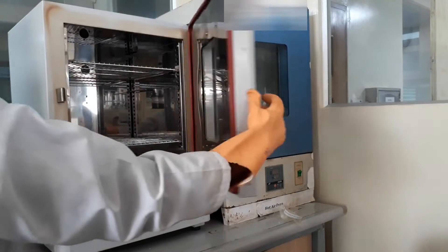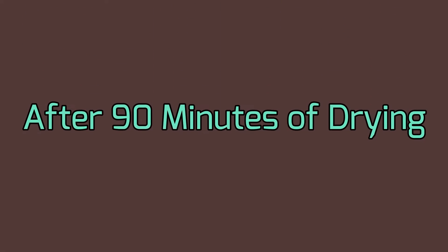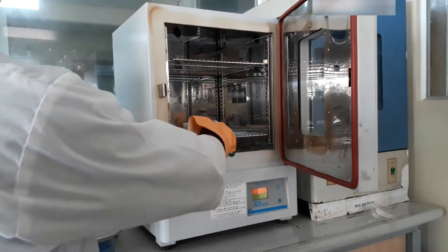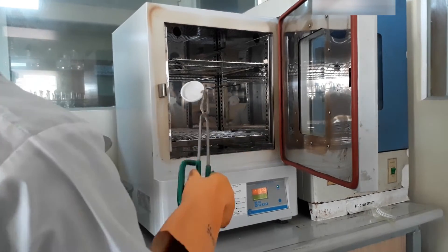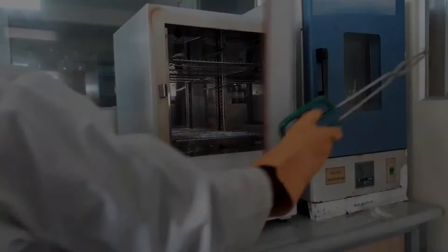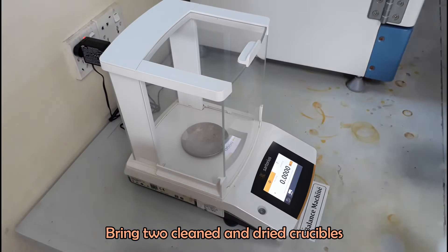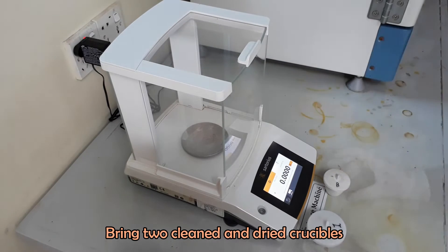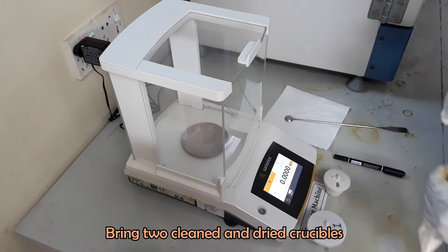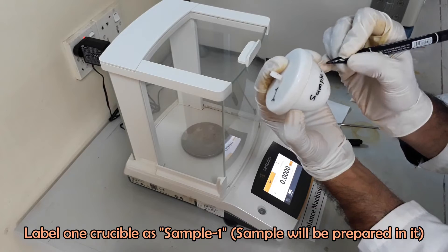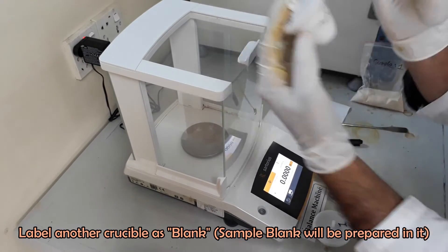Now dry the crucible in hot air oven for 90 minutes. In this step, we will burn our sample to make ash. Bring two properly cleaned and dried crucibles. Label one crucible with sample ID. We will prepare sample in it. Label another with blank.